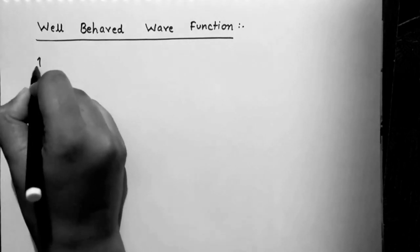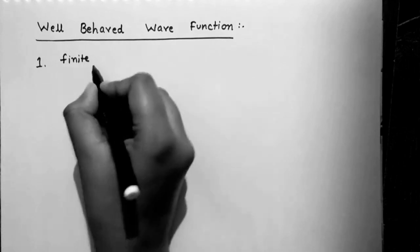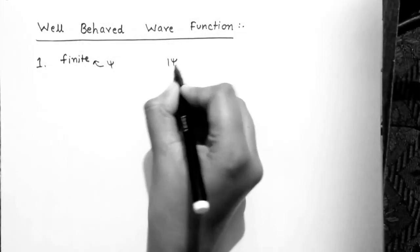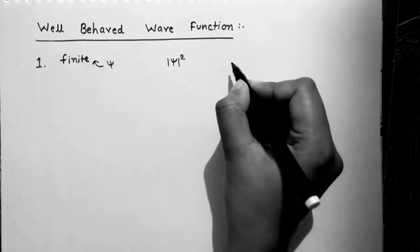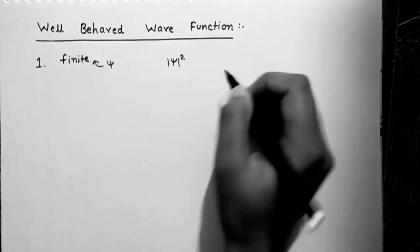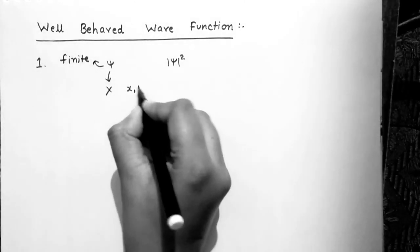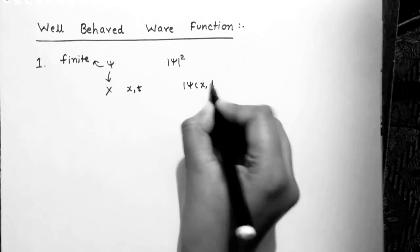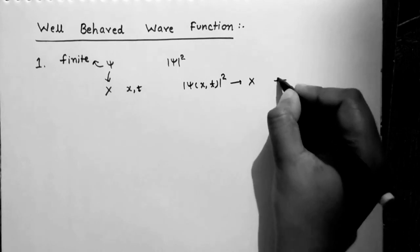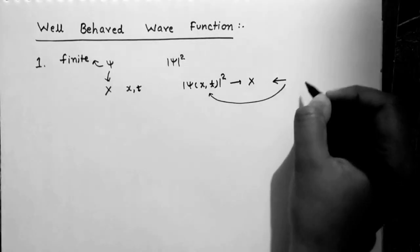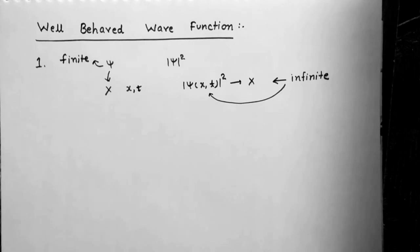The first condition for a well-behaved wave function is that psi must be finite in all space. If psi is finite then |ψ|² will also be finite, meaning the probability to find the particle at a particular position will also be finite. If psi is not finite at a particular position x and time t, then |ψ(x,t)|² will also be infinite, meaning the probability becomes infinite — which is not physically acceptable.